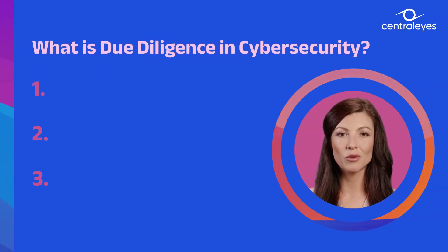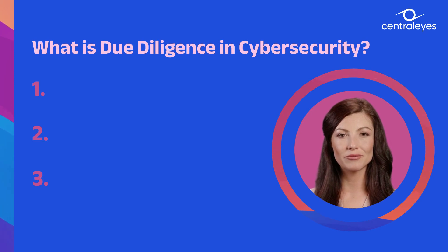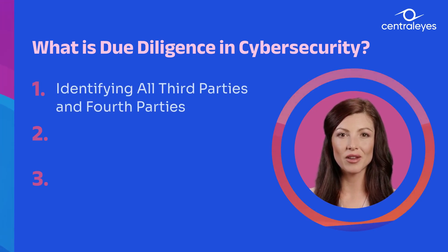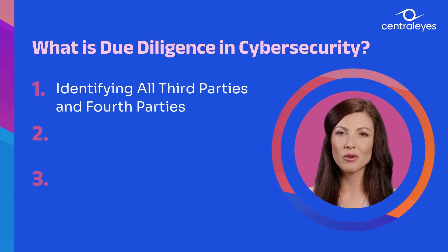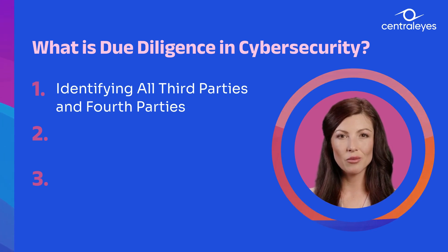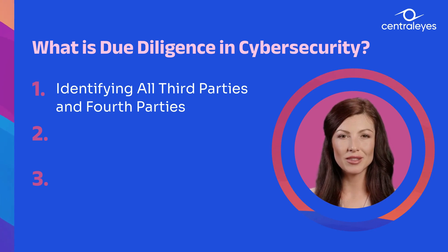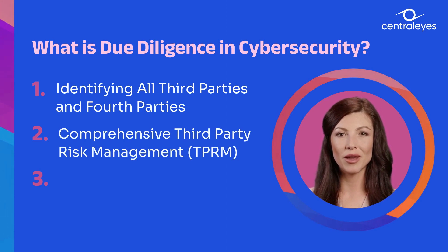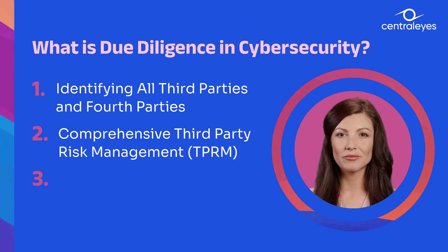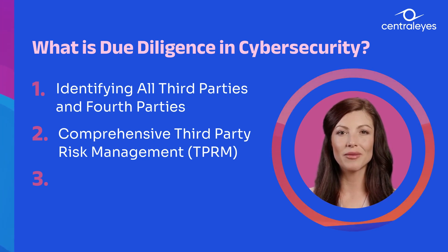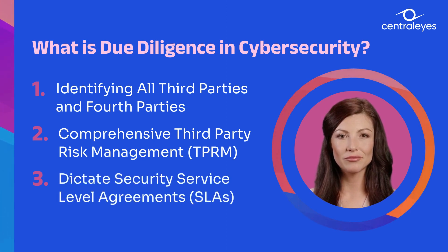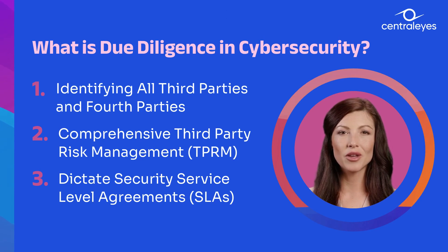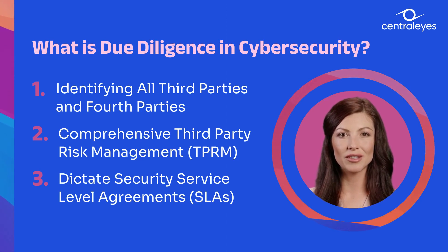Due diligence is required to ensure that your vendors and partners are implementing appropriate cybersecurity measures. Critical aspects of due diligence include: identifying all third parties and fourth parties — having a comprehensive understanding of every party involved in your operations, knowing everyone you work with and the companies they work with, and evaluating all relevant risks; comprehensive Third Party Risk Management (TPRM) — thoroughly understanding every third party's cybersecurity policies, programs, and posture, often beginning with a cybersecurity questionnaire that is evaluated and validated; and dictating security service level agreements — specifying contractual obligations regarding security, such as maintaining specific compliance levels or keeping you informed of any meaningful changes.